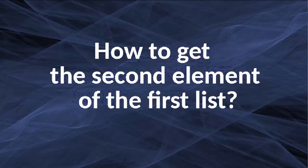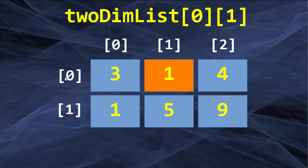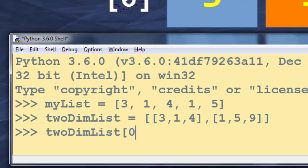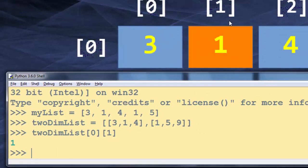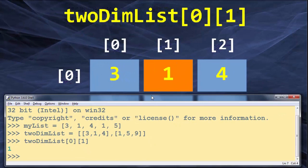Now let's solve a few simple examples. The first example is how to get the second element of the first list of our two-dimensional list. The first list has index 0, and the second element within it has index 1. So if we want to get this element, we call our variable representing the two-dimensional list — in the first brackets we put the index of the row, and in the second brackets we put the index of the column. I'm going to type that in Python IDLE, and yes, we get the correct element.